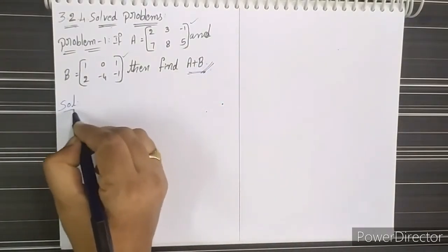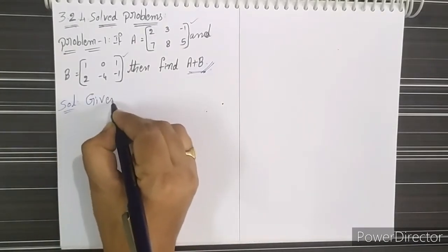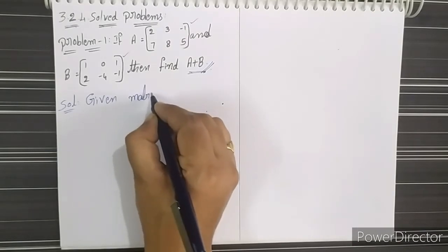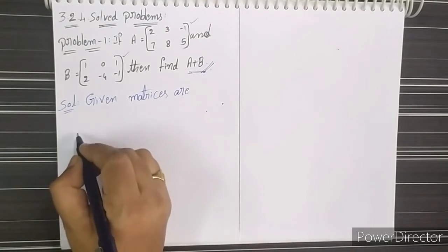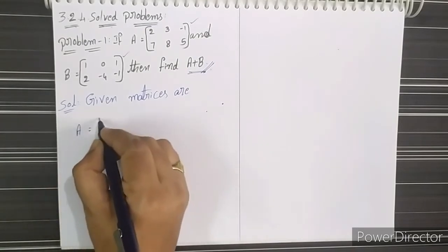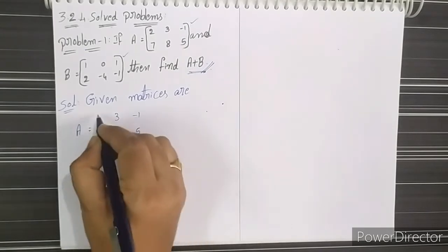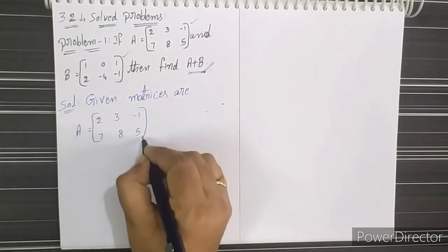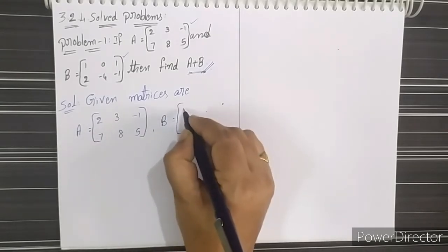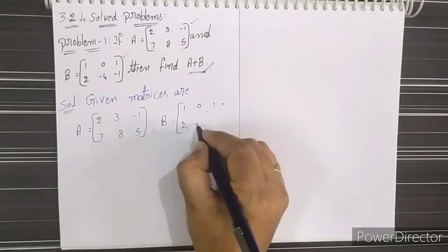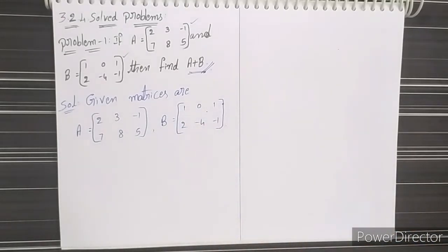Solution: first write down the given matrices. Given matrix A equals [2, 3, -1; 7, 8, 5]. This is the first matrix. The second matrix is B equals [1, 0, 1; 2, -4, -1]. This is our second matrix.